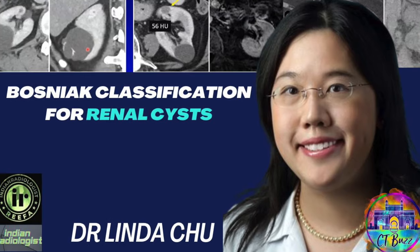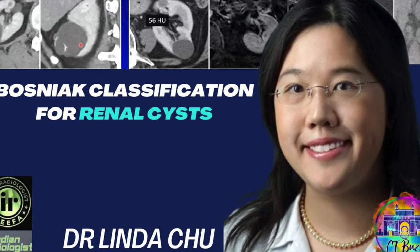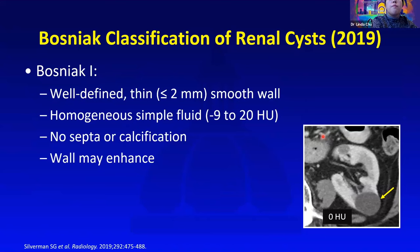Next we'll talk about renal cysts. The Bosniak classification was updated in 2019, in which they made it a little bit more specific on what they mean by thick and thin septations and how many septations is too many.